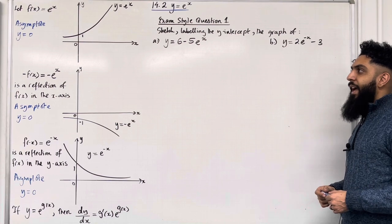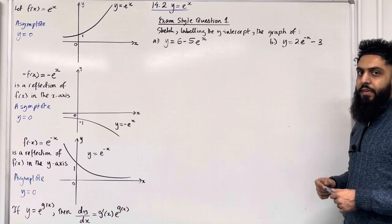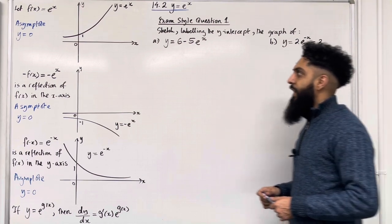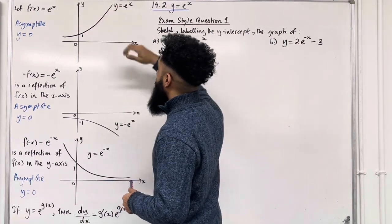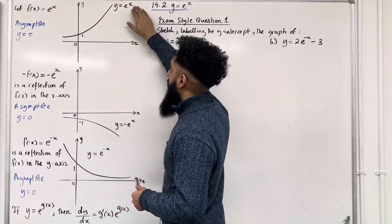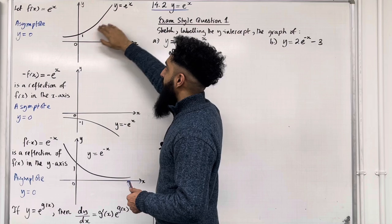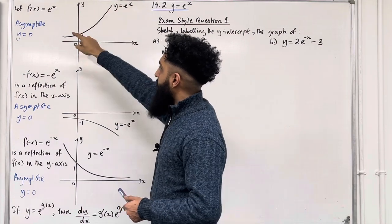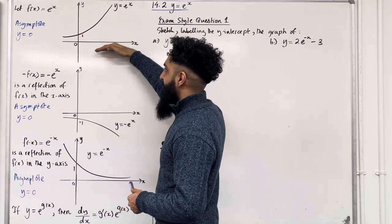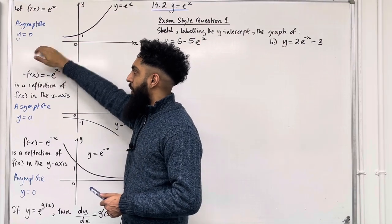Let f of x equal e to the power x. The graph of f of x equal e to the power x — if I substitute x equal 0, I get y equal e to the power 0, which is y equal 1. Hence the y-intercept is y equal 1. The curve does not cut the x-axis, hence the equation of the asymptote is y equal 0.